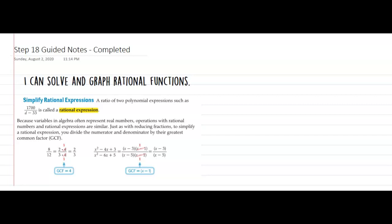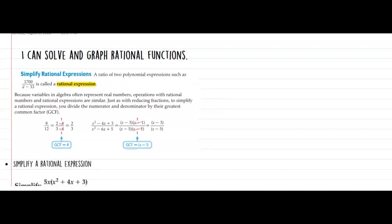Step 18: I can solve and graph rational functions. Step 18 has a lot happening. There's a lot going on when we're trying to solve and graph rational functions. First thing we need to do is understand what a rational function is. A rational function is just a ratio of two polynomial expressions — they look like an expression over an expression, or a fraction of expressions.